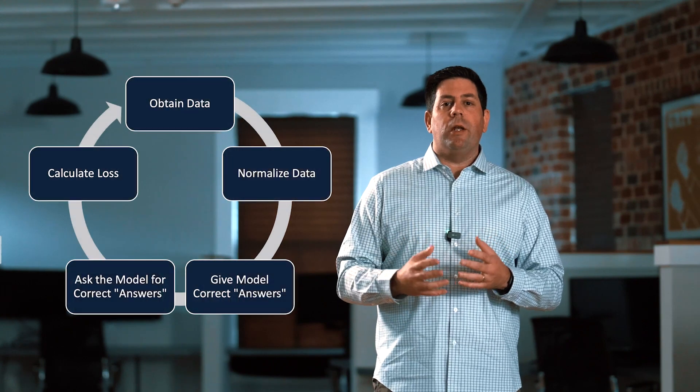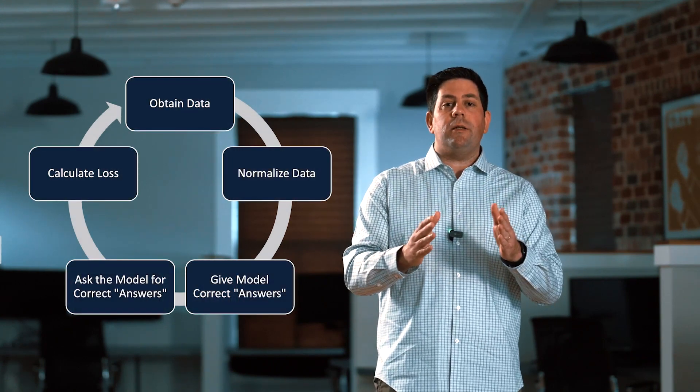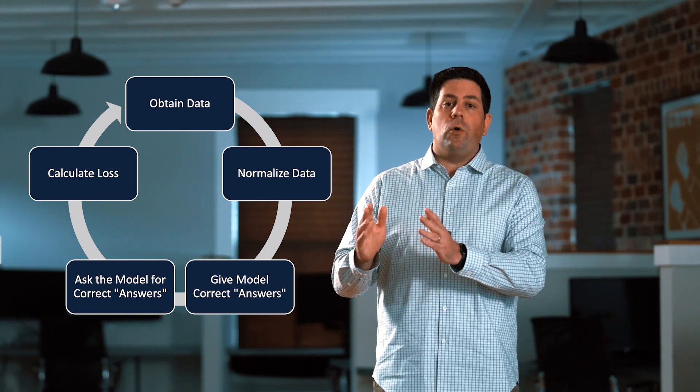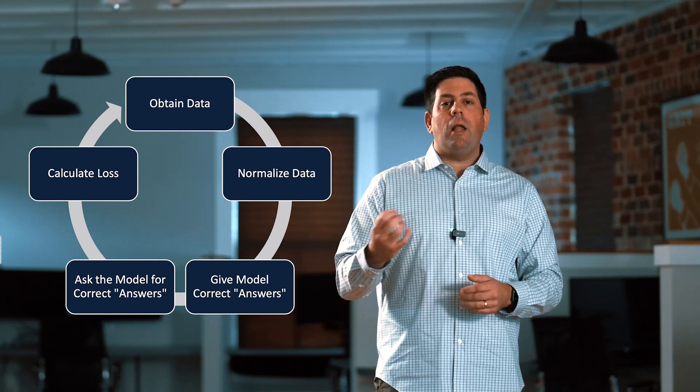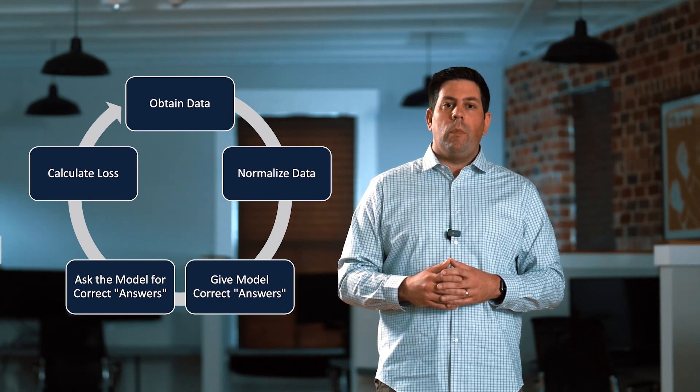But once we obtain the data and then normalize it using some fancy math — pre-calculus and some calculus in this case — we can start to train a model. A very common way to train a model is to say, here's 80% that we know the answers to. We want answers for the other 20%, and we ask the model to provide the answers for that other 20%.